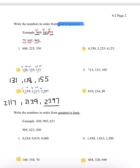Number 4, we have 4,350, 5,225, and 4,123. In the 1,000th place we have a 4, a 5, and a 4. Since 5 is the greatest, 5,225 goes last. For the two 4s, we look at the 100s — a 3 and a 1. Since 1 is less, 4,123 is our least number and goes first. The order is 4,123, 4,350, and 5,225.